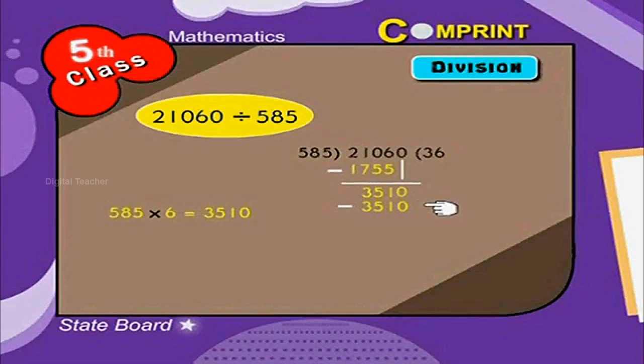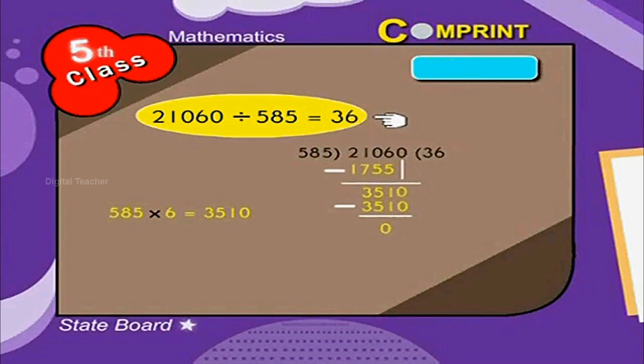3510 minus 3510 is equal to 0. That is, 21,060 divided by 585 is equal to 36.